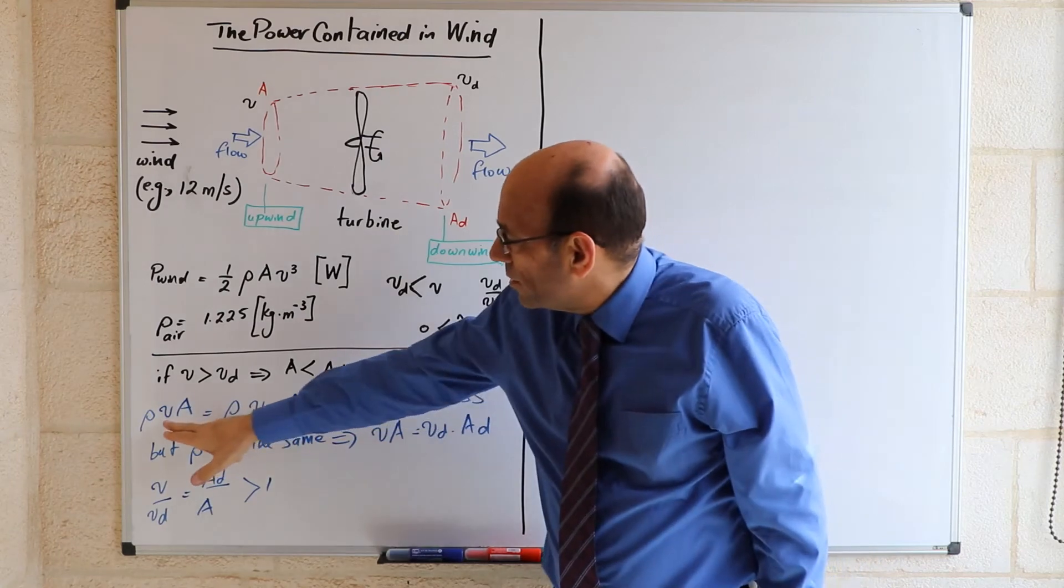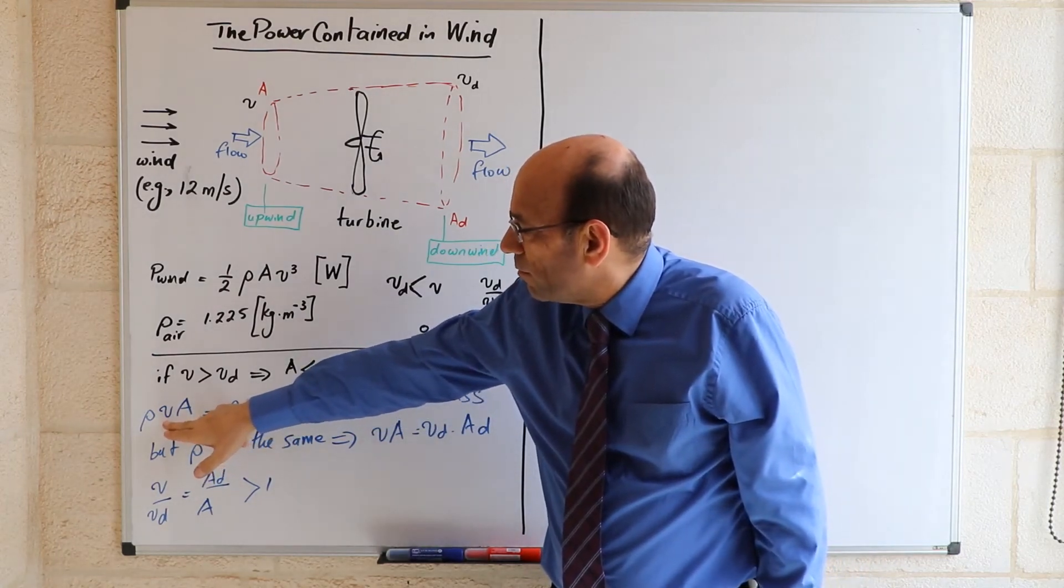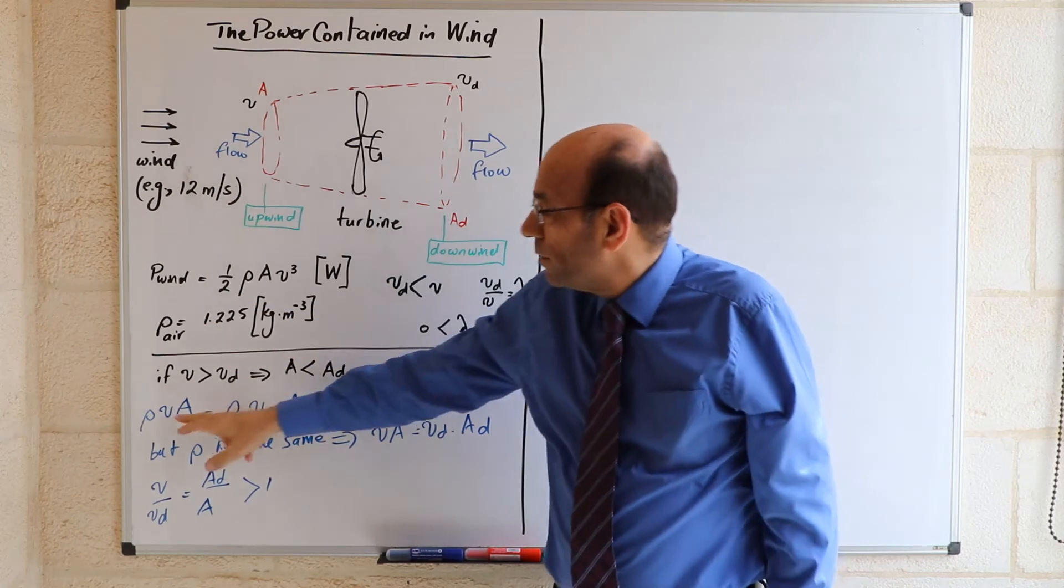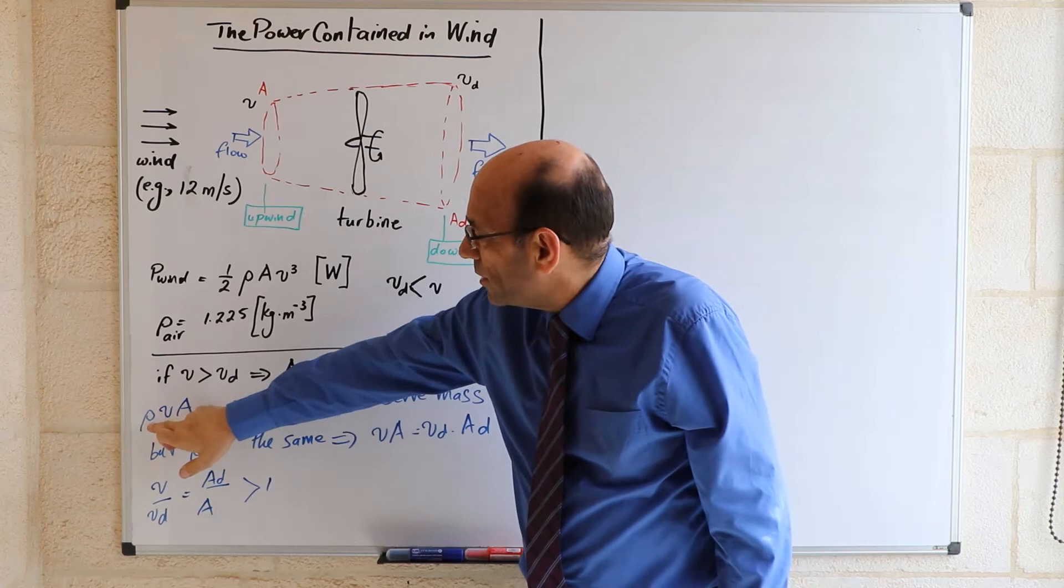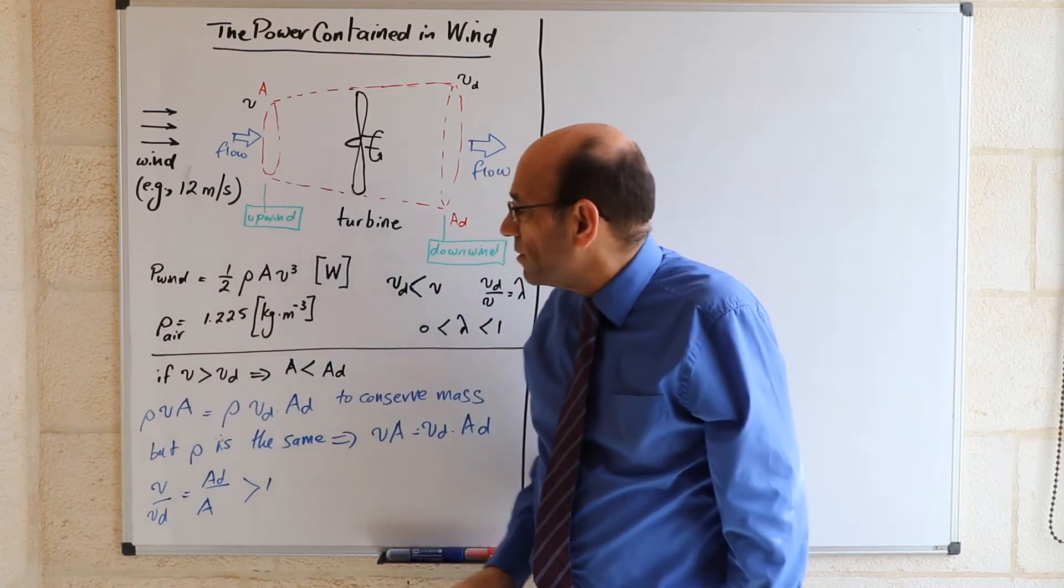So this is the flow of air, the mass flow of air at this point, which is V times A. That's volumetric flow rate multiplied by rho gives us mass flow rate.